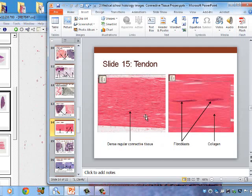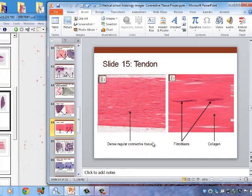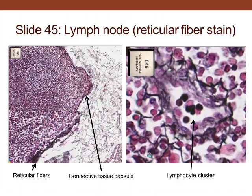The next image is of a tendon, which is dense regular connective tissue. The collagen tissue runs in one direction — this regularity distinguishes it from the irregular arrangement in the dermis. Here we see fibroblasts and collagen bundles all aligned in one direction. The dark marks visible are the nuclei of the fibroblasts.